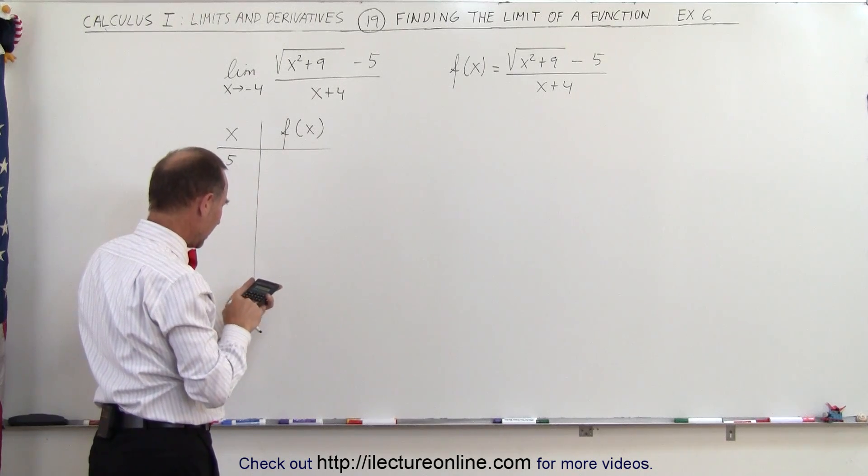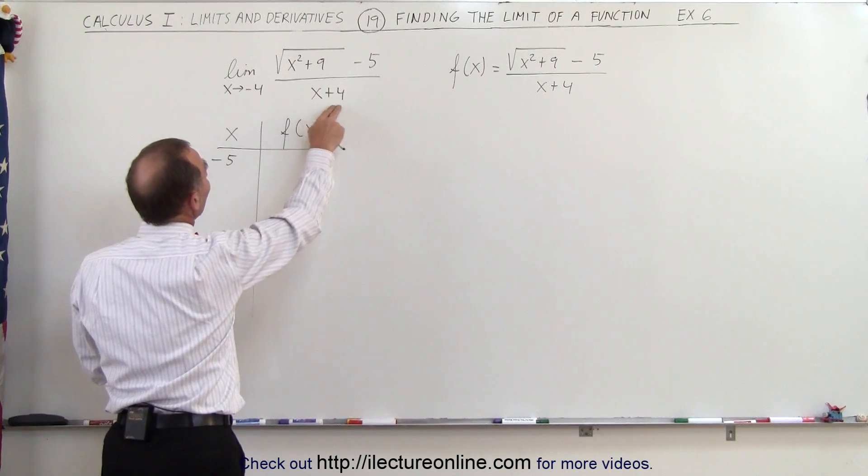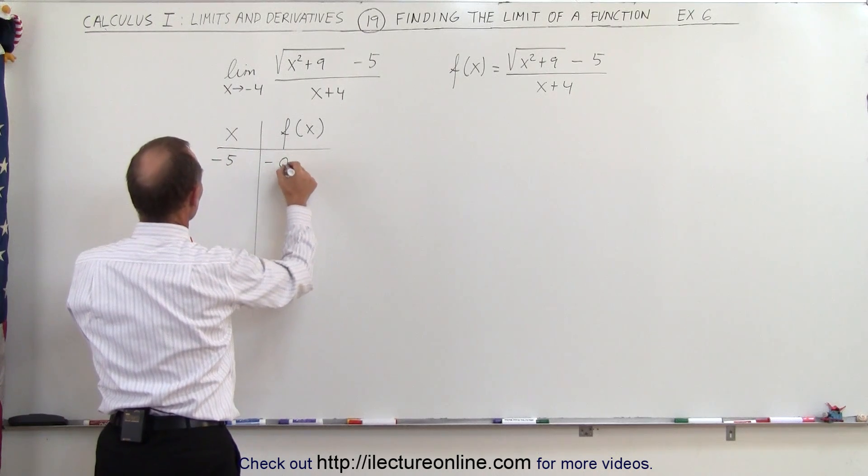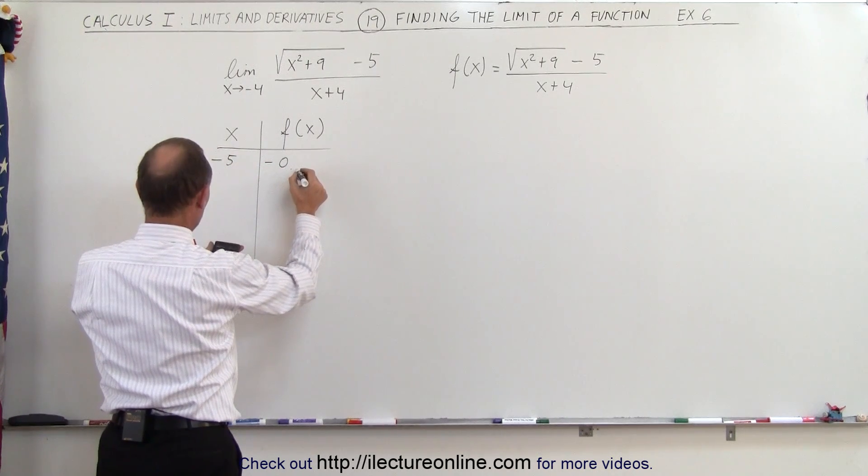Minus 5, divide by minus 5 plus 4, which is minus 1, so we get minus 0.831.